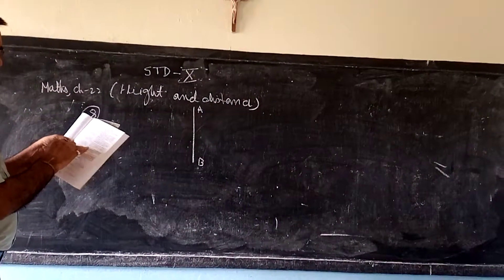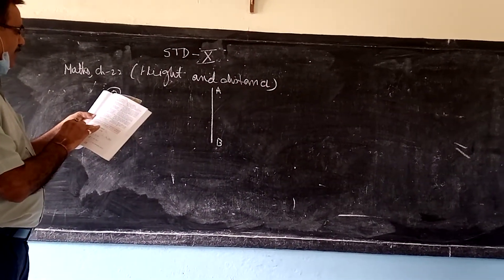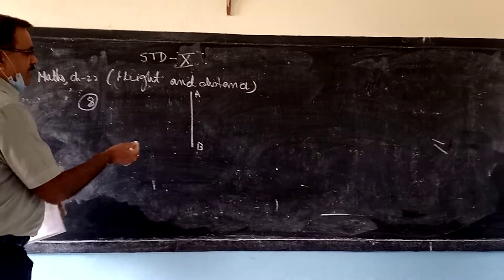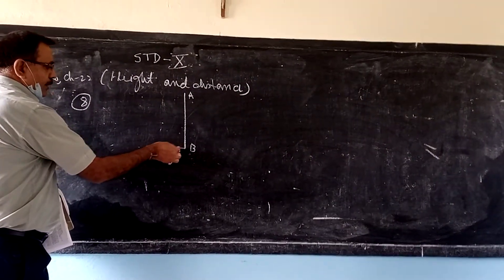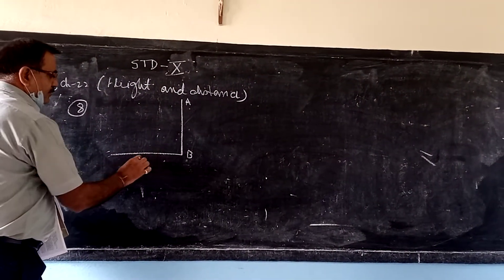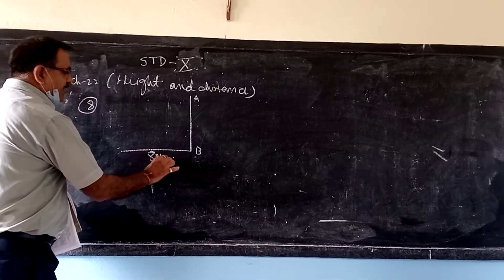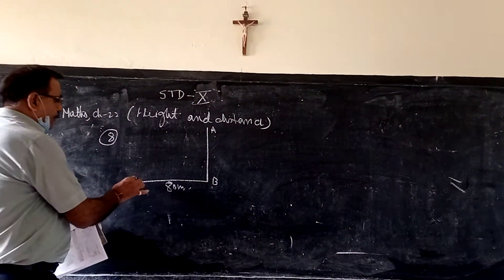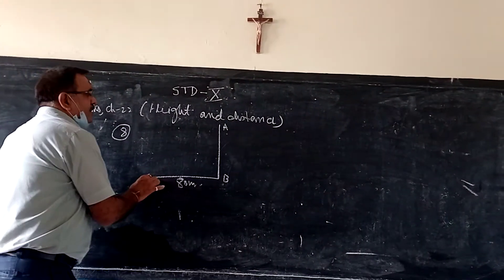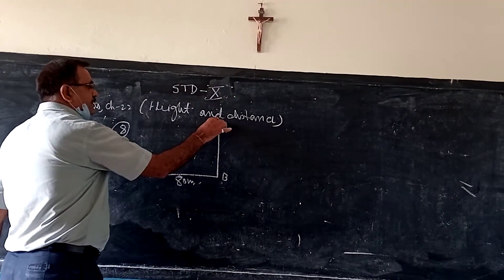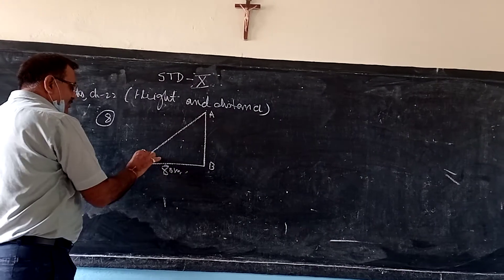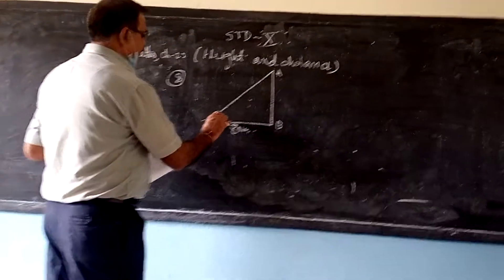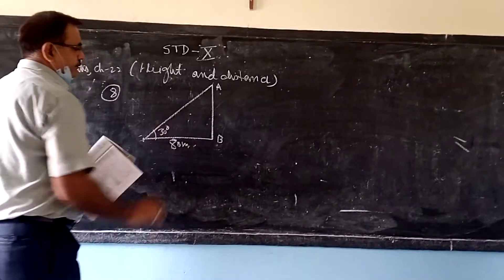So angle of elevation here, from the base of the tower the distance is given 80 meter. And again from this point the angle of elevation at the top of the tower is given. How much is it given? 30 degrees.